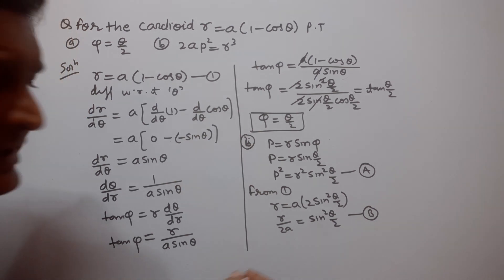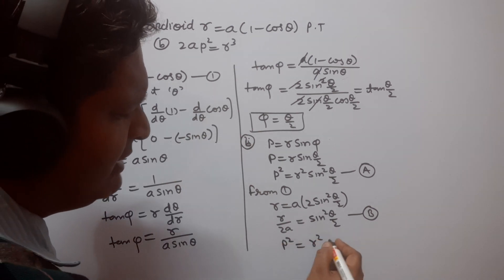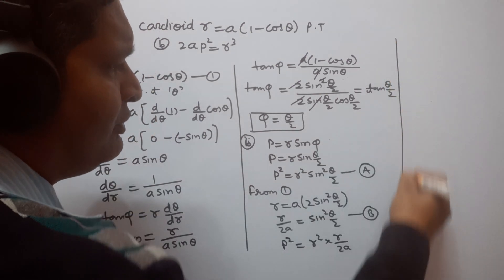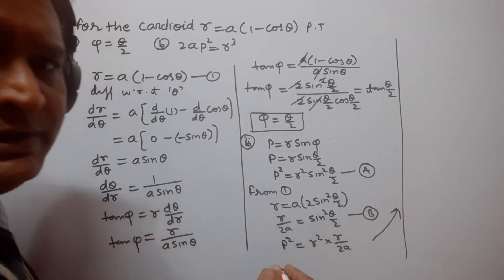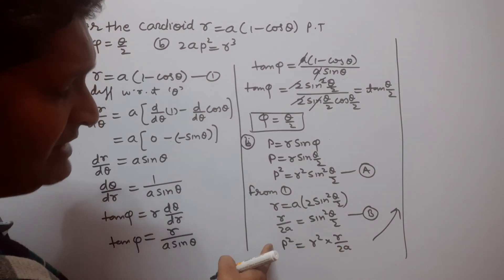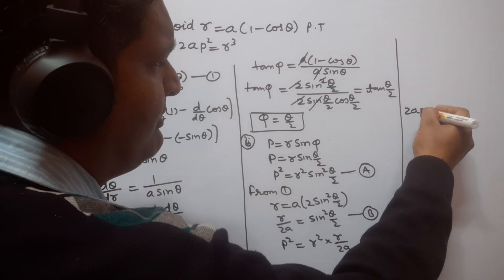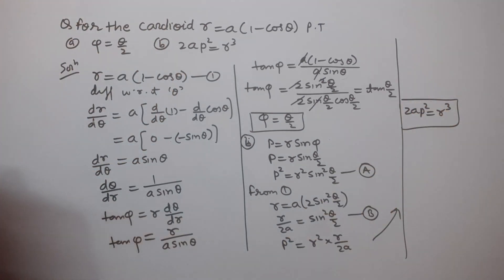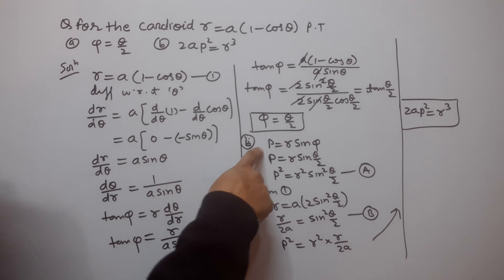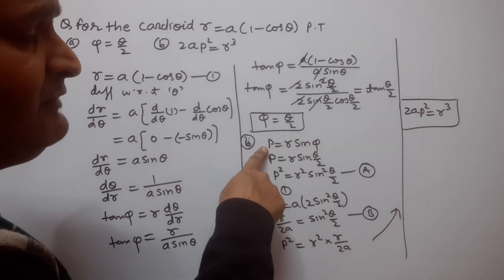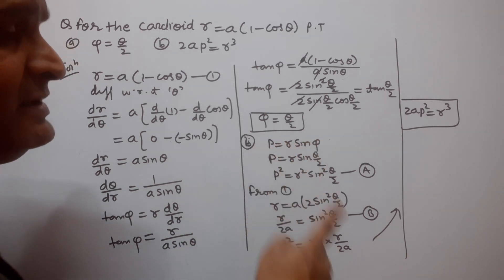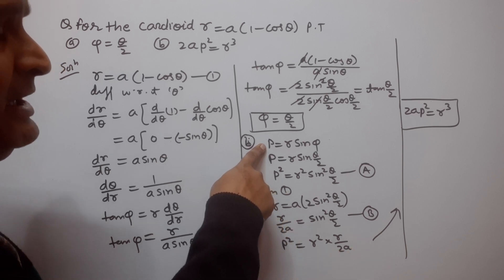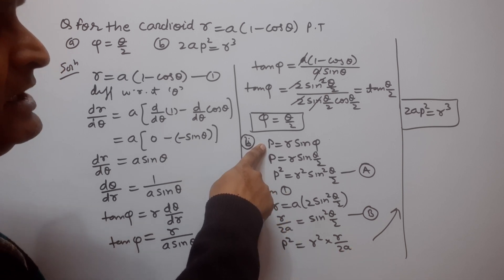Now we substitute the value of sin²(θ/2) from equation B into equation A. So we get p² equal to r² multiplied by r/(2a). Multiplying 2a to the left-hand side, we get 2Ap² equal to r³. This is the pedal equation of the given cardioid r equal to a(1 minus cos θ).